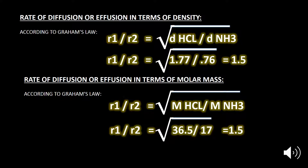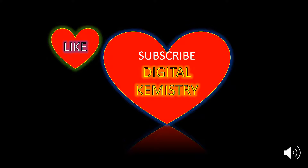Ammonia diffuses 1.5 times faster than HCl. We can also use Graham's Law in terms of molar masses. Substituting the molar masses of HCl and ammonia into the formula gives: rate of diffusion of ammonia over rate of diffusion of HCl = 1.5 again. This 1.5 value confirms that ammonia diffuses 1.5 times faster than HCl. Don't forget to like the video and subscribe to Digital Chemistry. Thank you for watching.